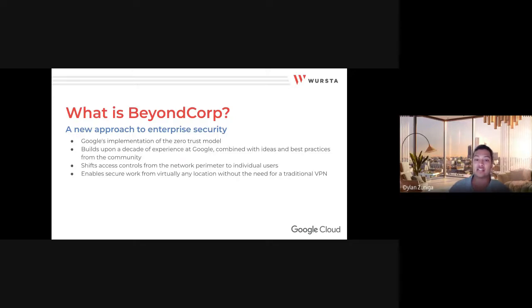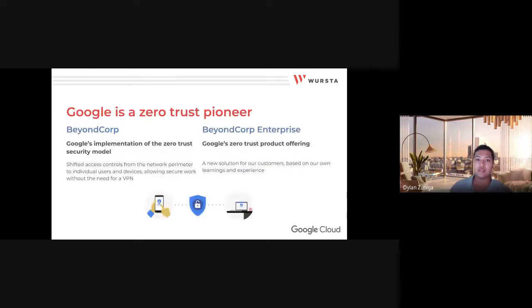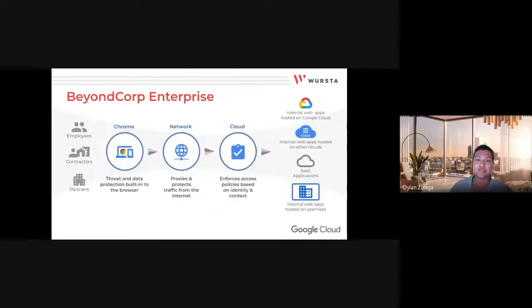BeyondCorp is Google's implementation of the Zero Trust model. We invented BeyondCorp in 2011 and have been improving it since. It builds upon a decade of experience at Google combined with best practices from the community. BeyondCorp started as an internal Google initiative to enable every employee to work from untrusted networks without a traditional VPN. This shifts access controls from the network perimeter to individual users and devices, allowing employees to securely work from virtually any location. Google has one of the biggest Zero Trust implementations across our 100,000 employees.